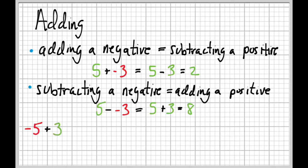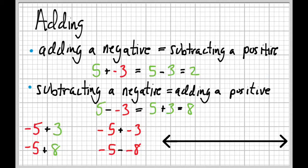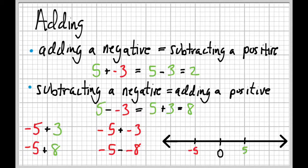You might think that's obvious, but it gets trickier with things like negative five plus three, negative five plus eight, negative five plus negative three, or negative five minus eight. What I like to use is the number line. A number line is a line that goes on forever in either direction — zero in the middle, positives to the right, negatives to the left.